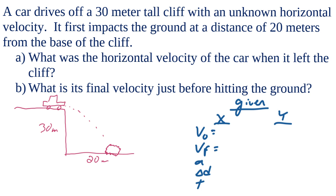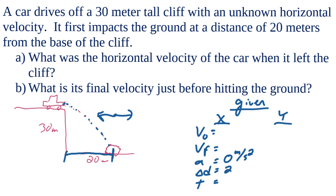In the x direction, we do not know the initial velocity. We do know the acceleration — once the car is in the air, there's nothing accelerating it horizontally, nothing speeding it up or slowing it down. Assuming no air resistance, acceleration is zero. The displacement is 20 meters, and time is also unknown.